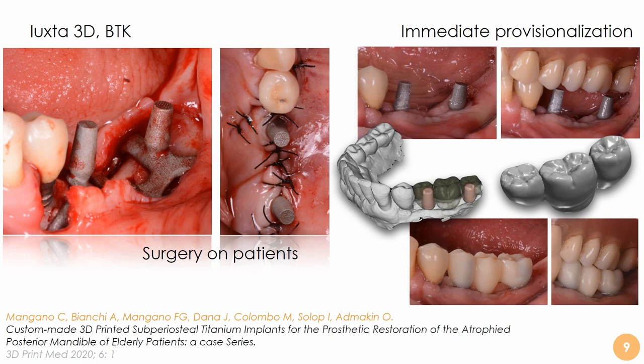For the surgical phase, we use a replica to prepare the flap and drill the holes for the fixation screws — not the titanium implant itself, but a replica in a different material. After mobilizing the flap properly, we can place the implant. Everything is quite fast because the proper fit is granted by the customized approach. We place the implant, fix two or three retention screws as needed, perform the suture, and can proceed with early or immediate loading. In this case it was early loading, and everything worked quite well.